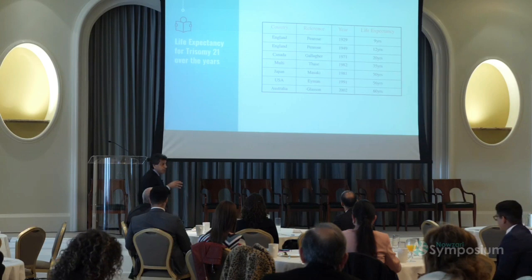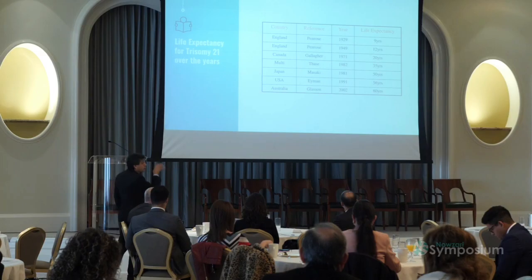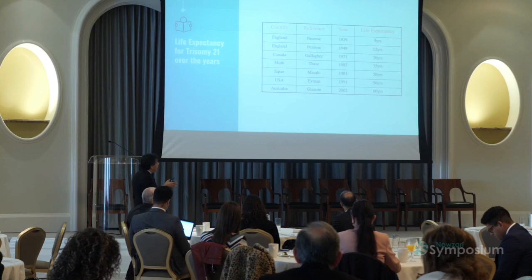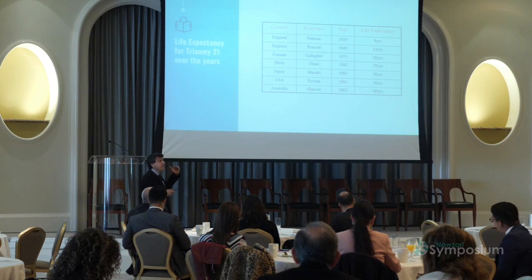It's interesting when it comes to trisomy 21 or Down syndrome patients. In 1929 they would live on average about nine years, then it went up to 12, 20, 35, and today they are living for 60 years. Interestingly, even with that research model, we realized that mostly it's about cytomegalovirus activity when it comes to viruses.